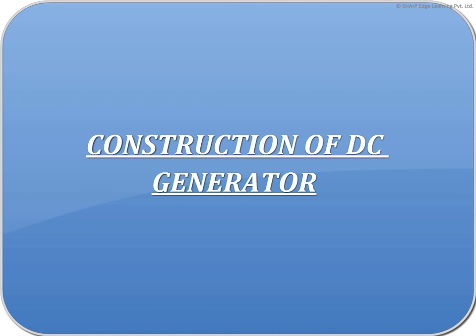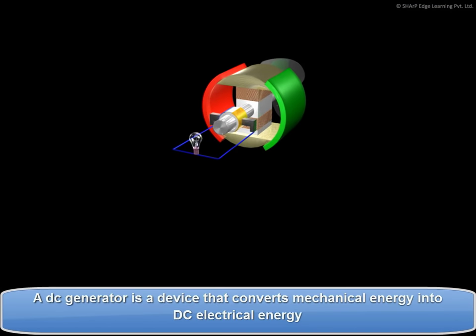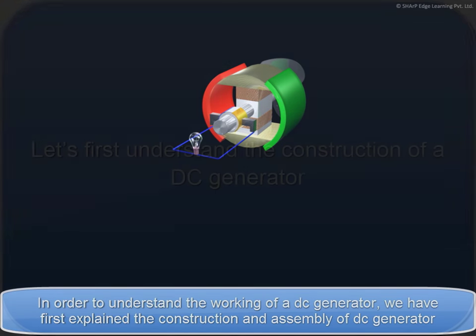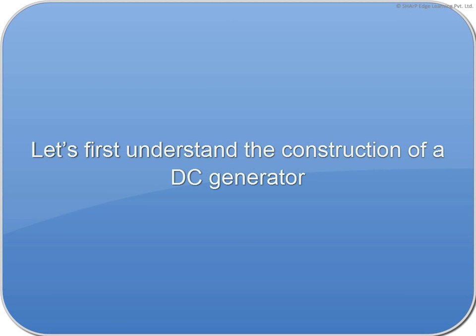Construction of DC Generator. A DC generator is a device that converts mechanical energy into DC electrical energy. In order to understand the working of a DC generator, we have first explained the construction and assembly of DC generator. Let's first understand the construction of a DC generator.